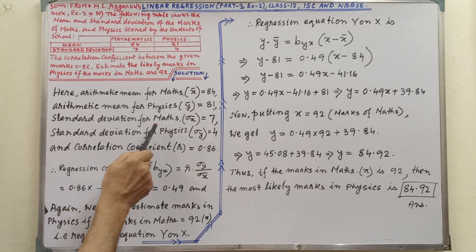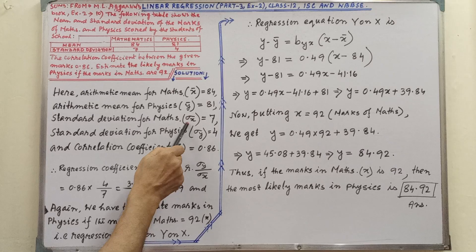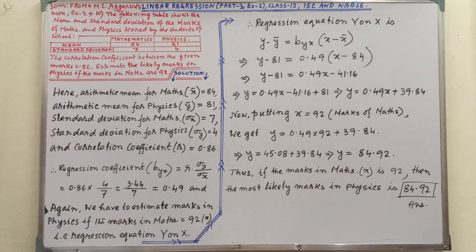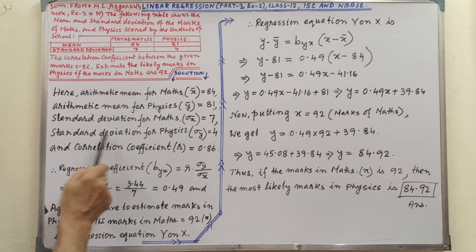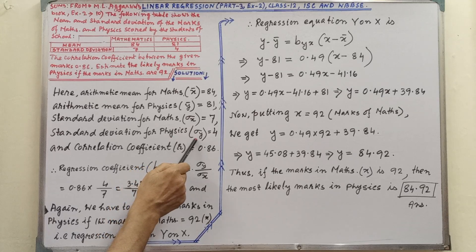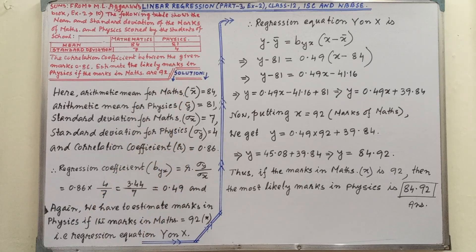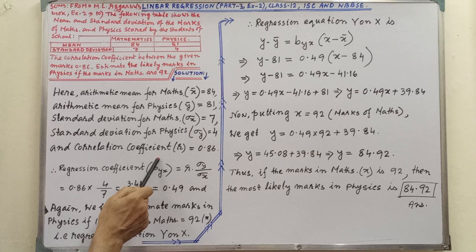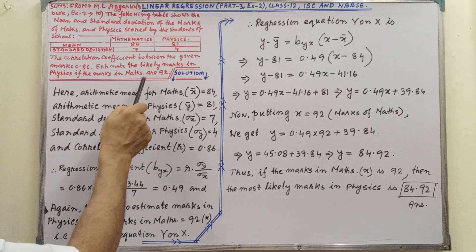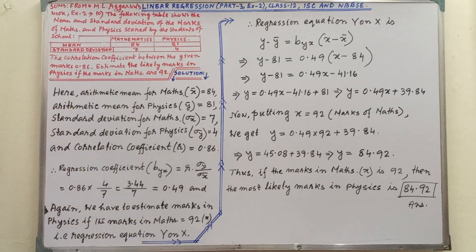Standard deviation for maths, delta x, equals 7. Standard deviation for physics, delta y, equals 4. And correlation coefficient r, given in our question, is 0.86.